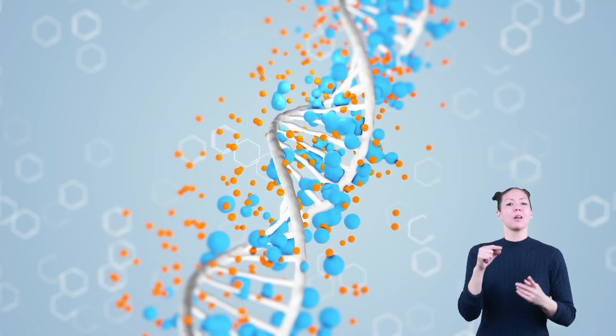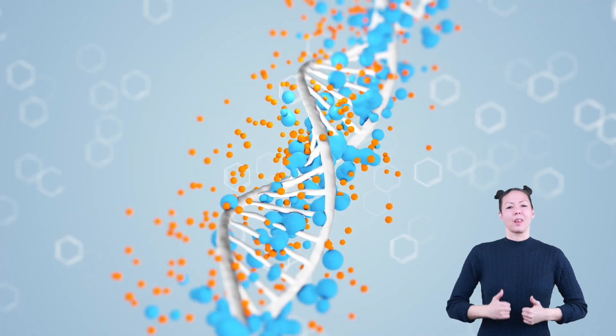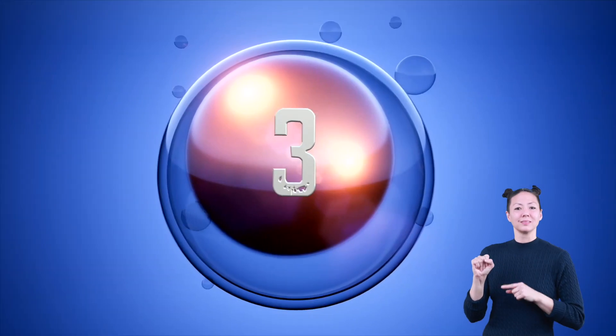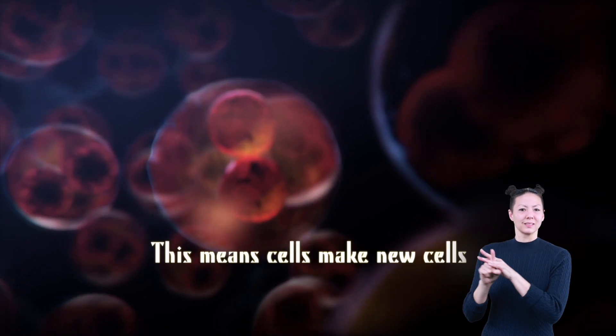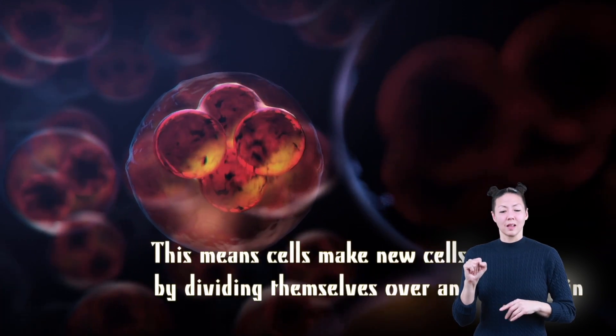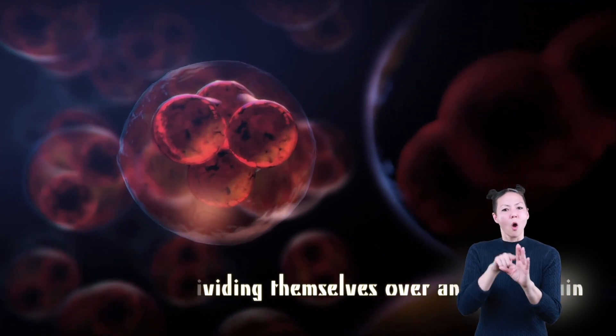Two, cells are the basic unit of life or the building blocks. Three, new cells come from existing cells through division. This means that cells make new cells by dividing themselves over and over again.